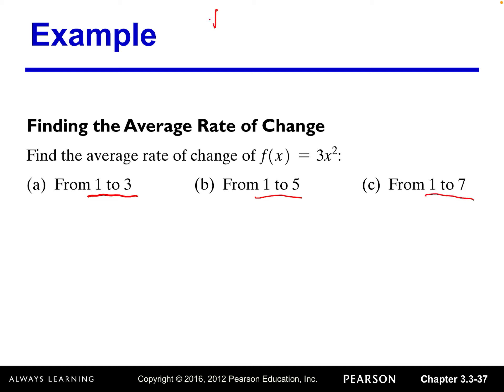We need to evaluate the function at x = 1, 3, 5, and 7. You can use a graphing calculator to evaluate the function, or you can do it by hand. Replacing x by 1: that's 3 times 1 squared, which is 3 times 1, equal to 3.